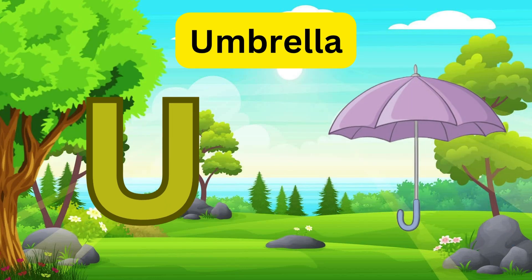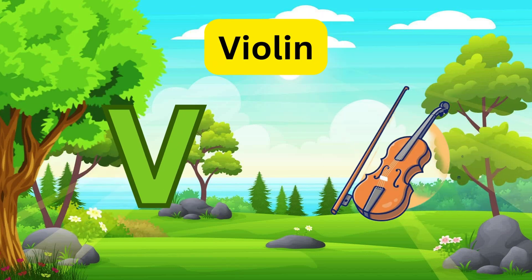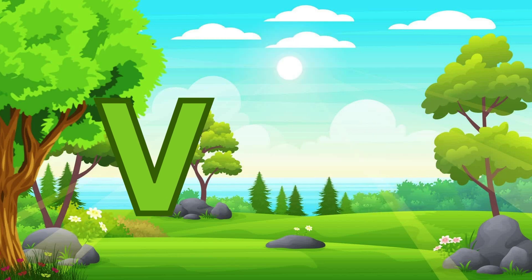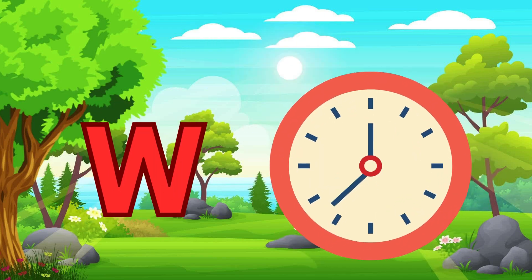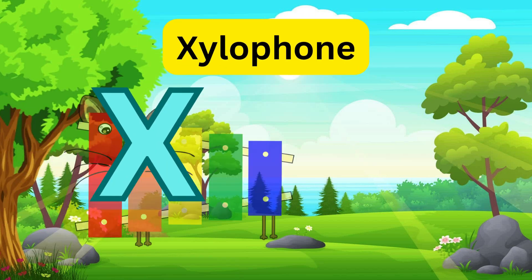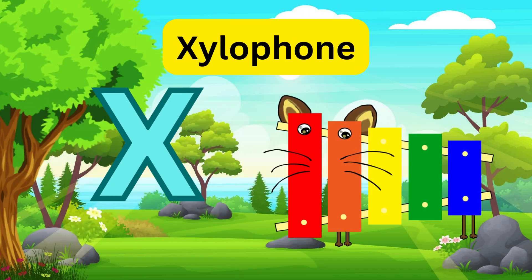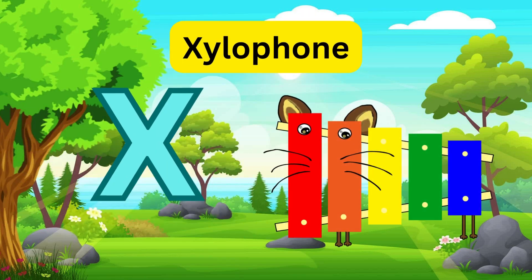U is for Umbrella, U-U-Umbrella. V is for Violin, V-V-Violin. W is for Watch, W-W-Watch. X is for Xylophone, Z-Z-Xylophone.